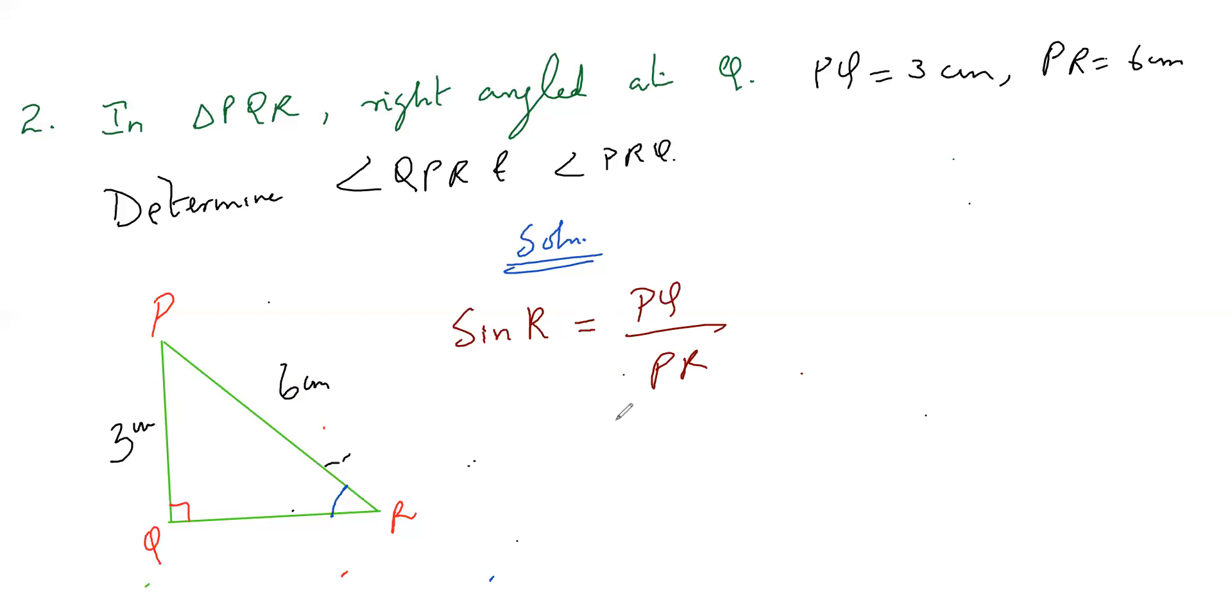So sin R we don't know, what is PQ, PQ we know, 3 by 6. So if I cancel this, I'll get 1 by 2. So sin R is equal to 1 by 2. What angle of sin will give me 1 by 2, sin 30 will give me 1 by 2. So sin R is equal to sin 30. So I can cancel sin and sin. So R value is 30 degree.